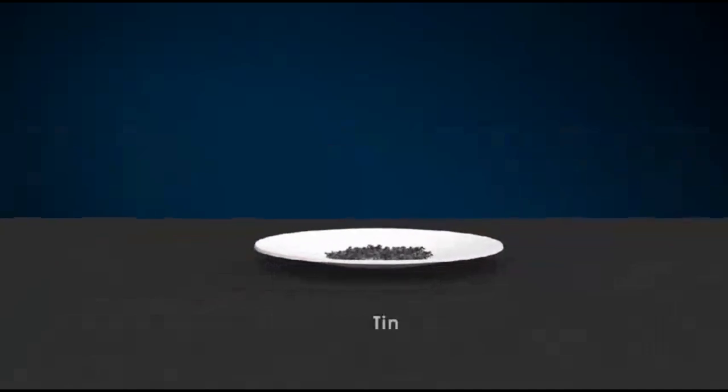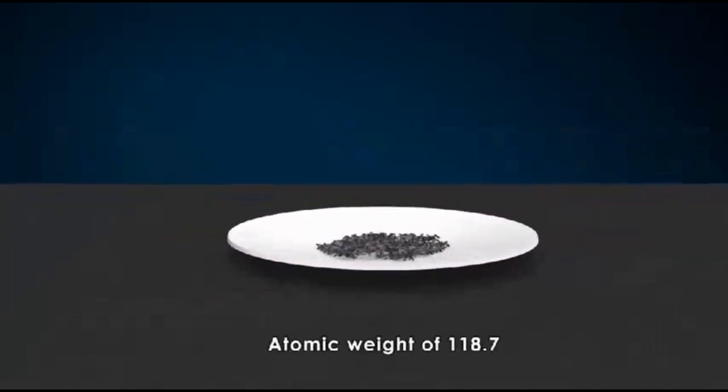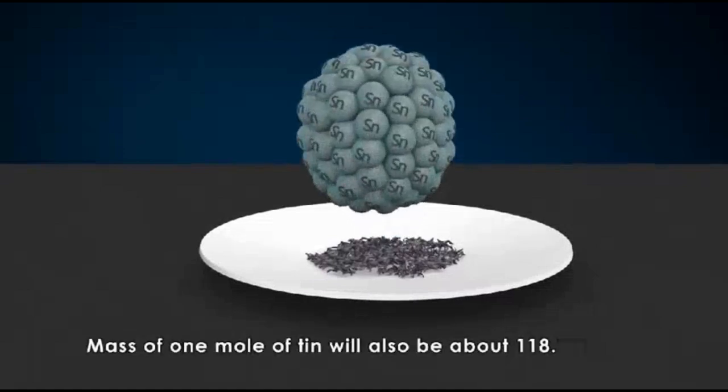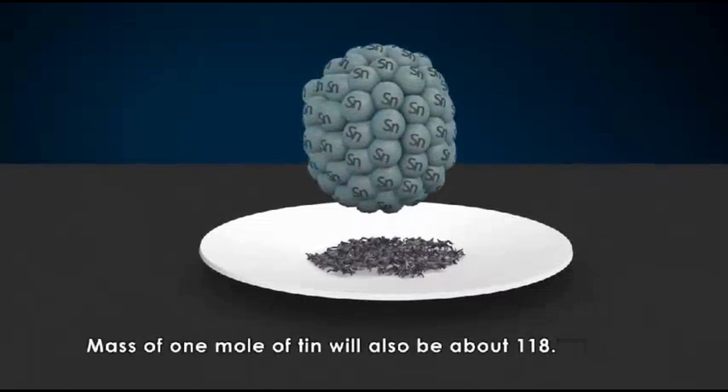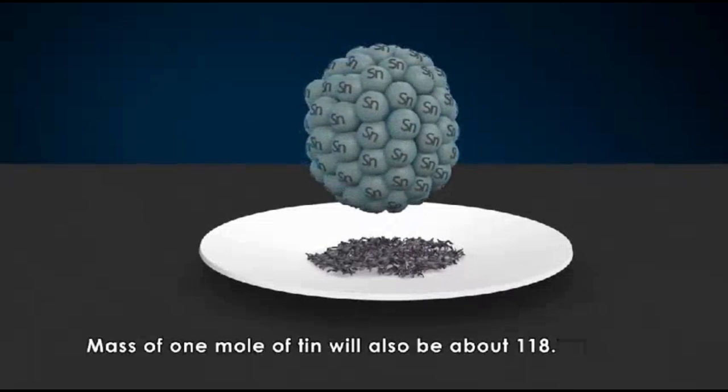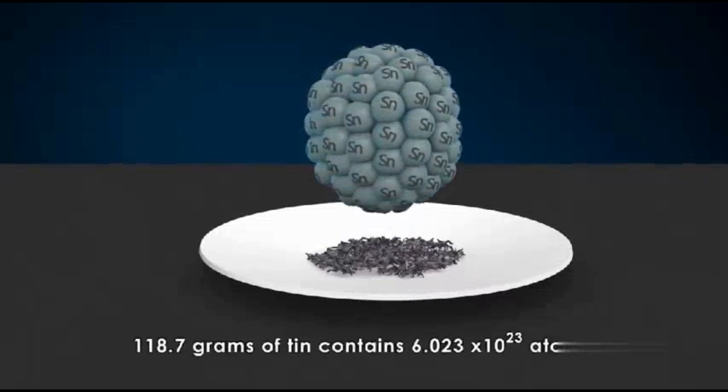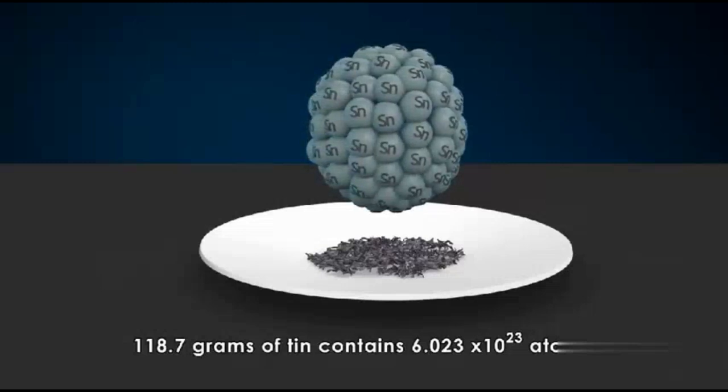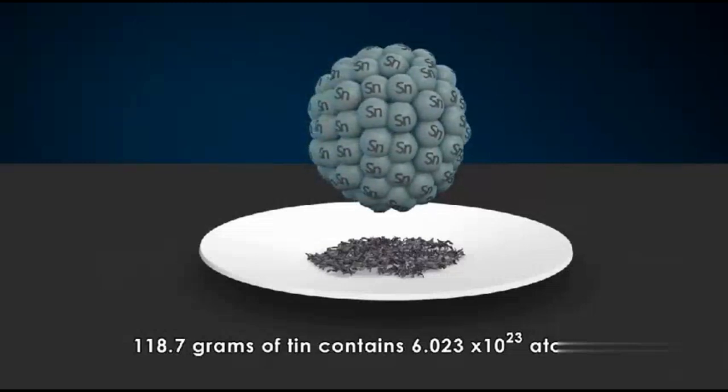Let's look at tin which has an atomic weight of 118.7. The mass of one mole of tin will also be about 118.7 grams, implying that 118.7 grams of tin contains 6.023 × 10²³ atoms.